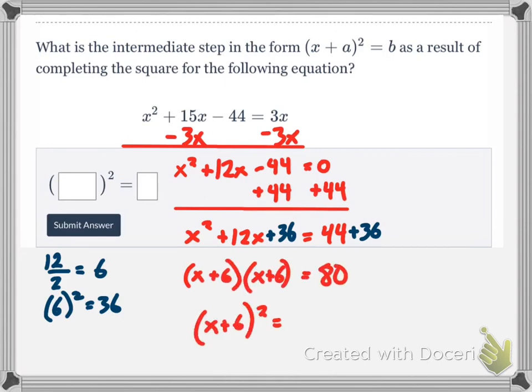So now if I factor that x squared plus 12x plus 36, that equals x plus 6 times x plus 6, and that whole thing equals 80. So this is what I'm going to submit into Delta Math. I would just type in x plus 6 here and 80 here. Hit submit, and you're done.